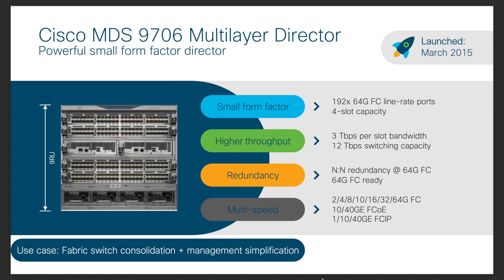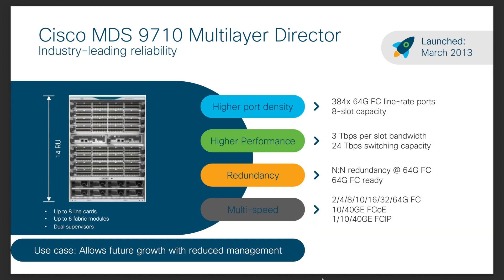The MDS 9706 can provide flexible port density with a low rack space of 9RU, along with higher scalability and n-to-n grid level power supply redundancy.